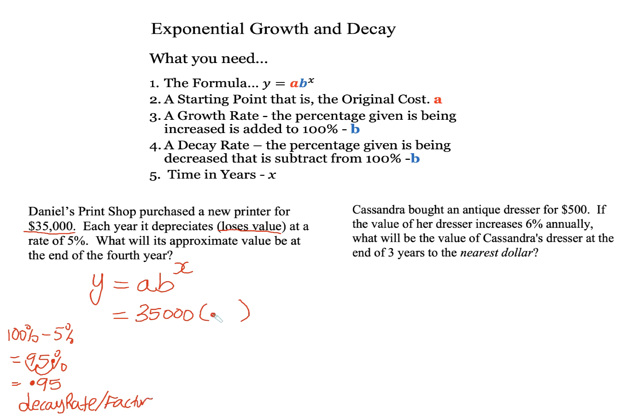Or some books call it a decay factor. So I'm going to put that here, 0.95. If you want to put the 0 in front, you can. I'll put the 0. So I have 0.95. And then what's the timeline for this? Four years. So that's my formula. 35,000 multiplying by 0.95 raised to the fourth power.